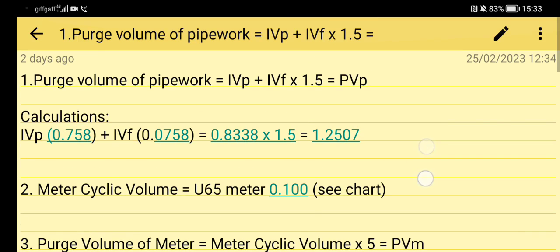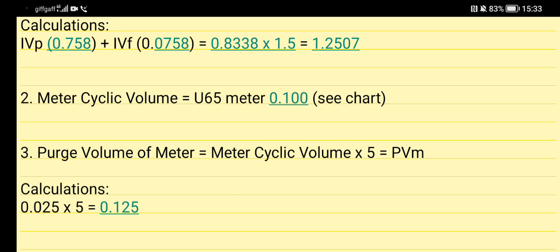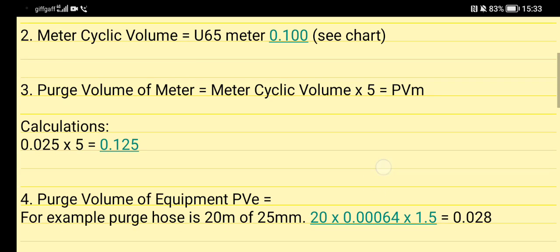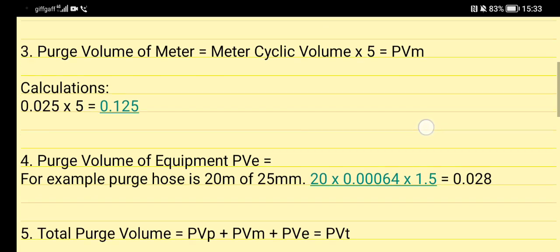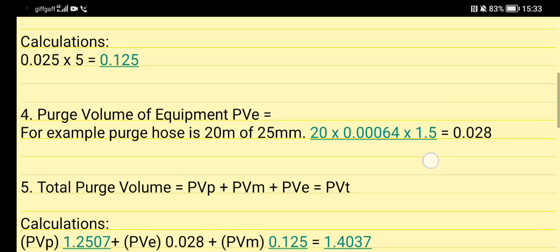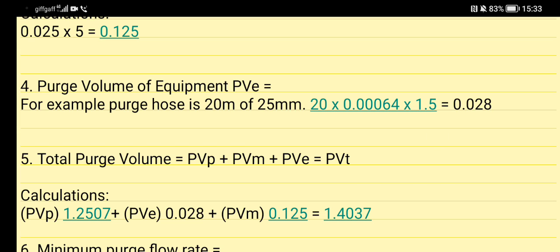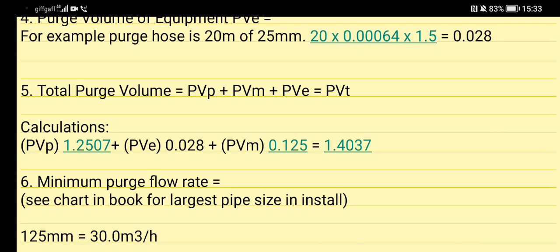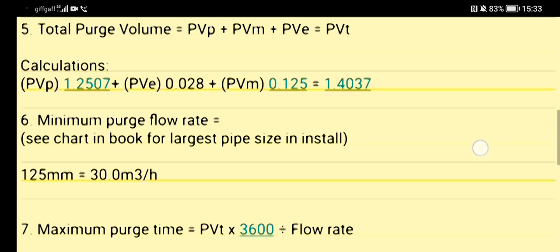Just because stage 2 was wrong, the rest of my calculations would have ended up wrong, but the process was correct - just use the correct chart, the cyclic volume chart. So here we go: 0.025 times 5 got me the 0.125, then the purge volume of equipment PVe is here, then the total purge volume, and then the calculations.